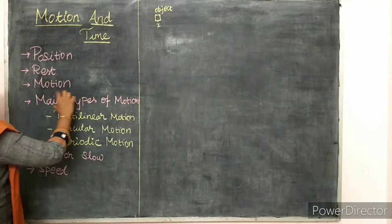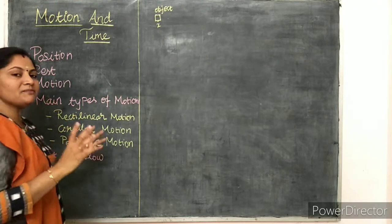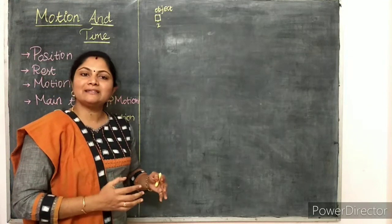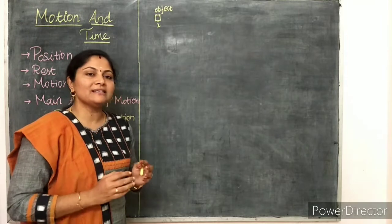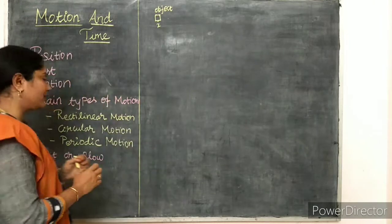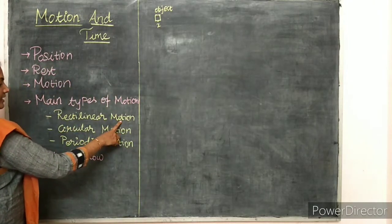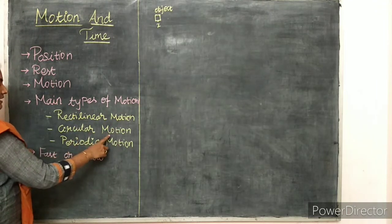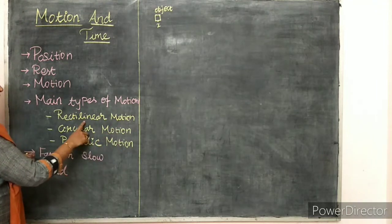What are the main types of motion? We saw many types in our sixth standard, but in this lesson we are going to discuss certain important types only. The first one is rectilinear motion, the second one is circular motion, and the third one is periodic motion.